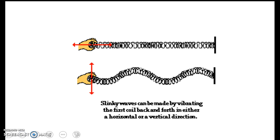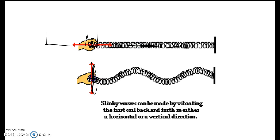We can also do this with a slinky. If we attach a slinky to a wall, we can pull the coil back and push it forward and get a wave to go across, or we can take the coil and move it up and down to get a wave that would have this type of shape. Either movement will make a wave.